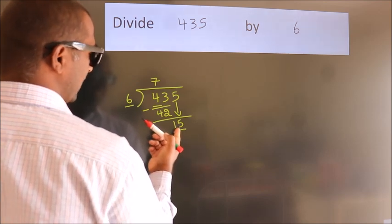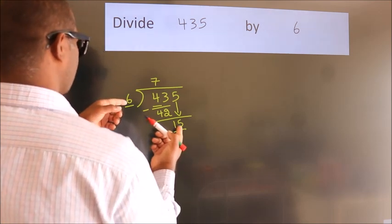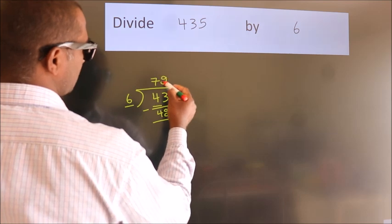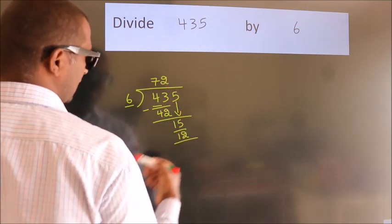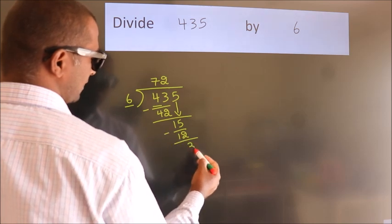A number close to 15 in the 6 table is 6 times 2 equals 12. Now we subtract. We get 3.